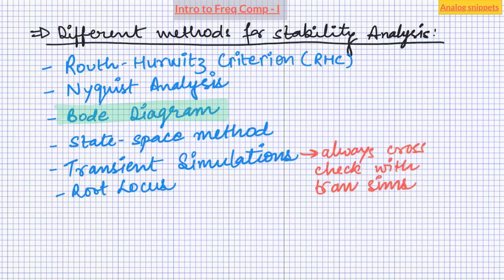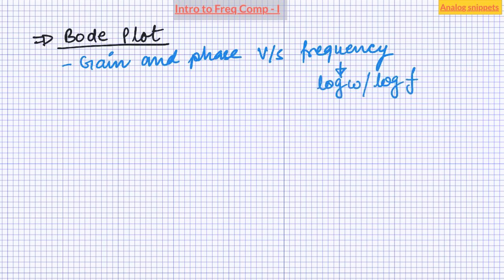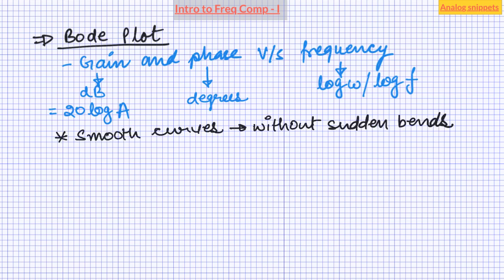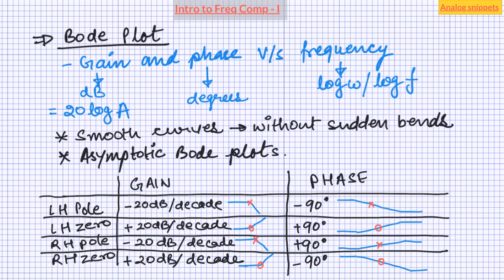Next we will look at Bode diagrams in more detail. A Bode plot refers to the gain and phase plot of a transfer function with respect to frequency, where frequency is in log scale, gain is plotted in dBs, and phase in degrees. As such, Bode plots are continuous plots without sudden bends and jumps. But in most pen-and-paper analysis, we use what is known as asymptotic Bode plots, where a pole or zero causes a sudden bend of 20 dB per decade in the gain plot and a 90 degree phase shift over two decades of frequencies. Bode plots are not specific to open loop transfer functions — we can draw Bode plots for any type of transfer function.